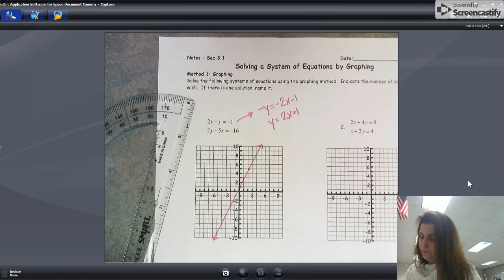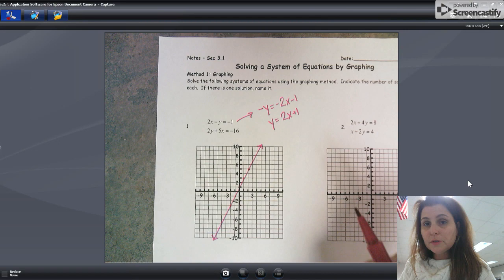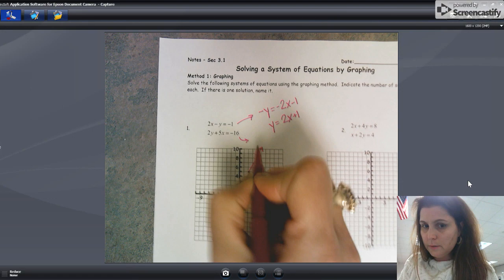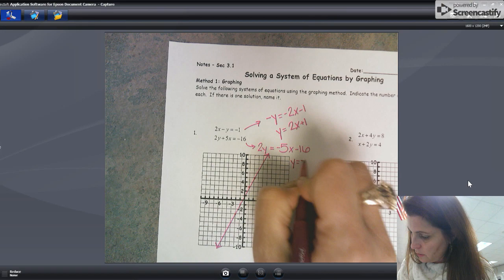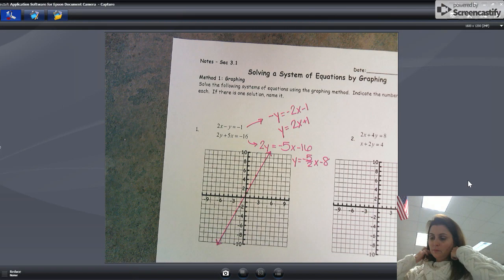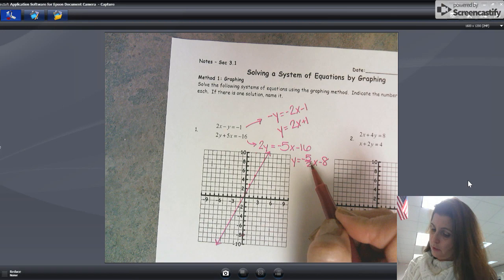Okay, there's one of our lines. Next up, second line. Again, I'm going to switch this to slope-intercept form to make it easy to work with. Subtract 5x from both sides, and then divide by 2 all the way through. So I'll end up with y equals negative 5 halves x minus 8.